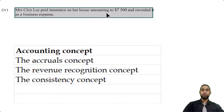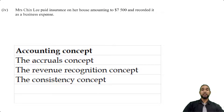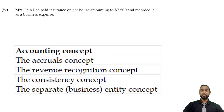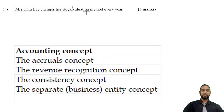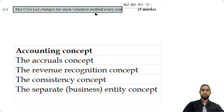Item four: Mrs. Chinlee paid insurance on her house amounting to seven thousand five hundred and recorded it as a business expense. In that case you are violating the separate entity concept, or the business entity concept.